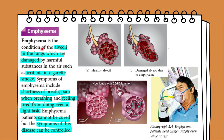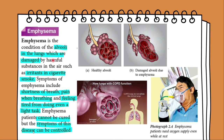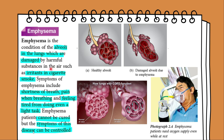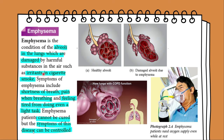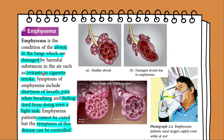Emphysema is a condition where the alveoli in the lungs are damaged by harmful substances in the air, such as the irritants in cigarette smoke. This reduces the surface area for gas exchange. The patient cannot take in enough oxygen and has very short breath. Other symptoms of emphysema include pain when breathing and feeling tired from doing even a light task.